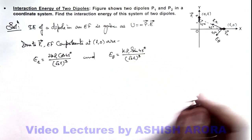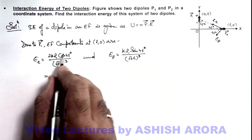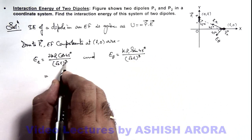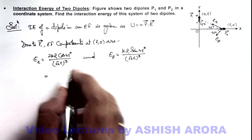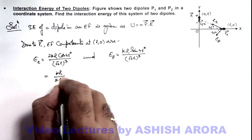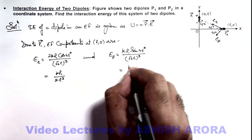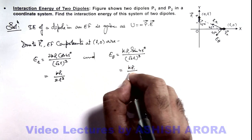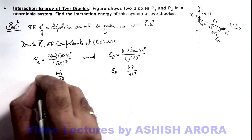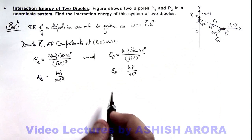The values we are getting: Er = 2kp1·cos45° = 2kp1·(1/√2) divided by (√2·l)³ = 2√2·l³, which simplifies to kp1 / (4l³ × ... wait — Er = kp1 / (4l³) and Eθ = kp1 / (4l³). These are the values of the electric field components due to dipole moment p1 at the location of p2.